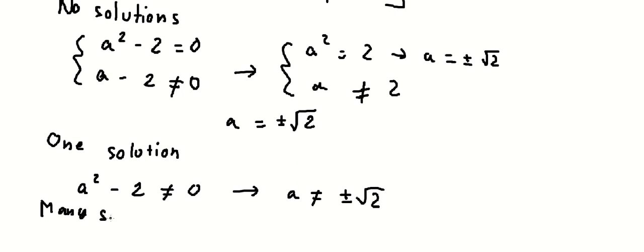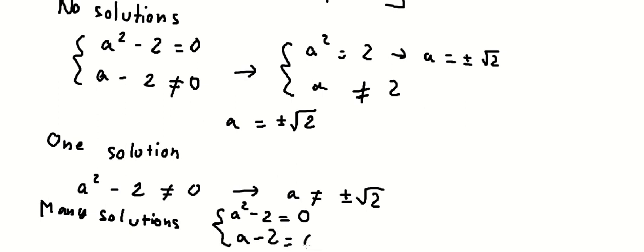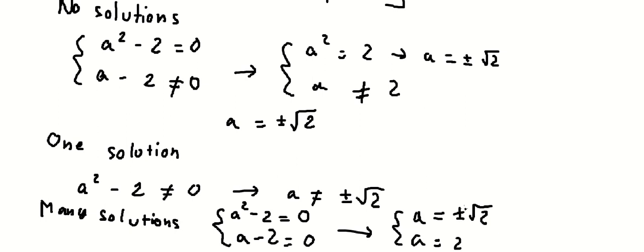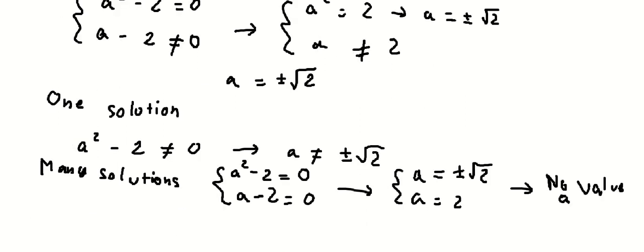For many solutions, we need both a squared minus two equals zero and a minus two equals zero. But when we calculate these conditions, we find there is no common value of a satisfying both simultaneously. So there is no value of a that gives many solutions. This is the end.